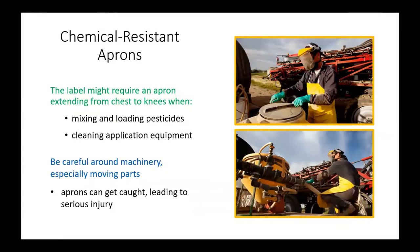Some labels include chemical-resistant aprons on the list of required PPE during mixing and loading tasks or when cleaning application equipment. This protects handlers from pesticide splashes, spills, and splash-back droplets when hosing off equipment. The apron shown extends from chest to knees, which is great for those tasks. However, the apron strings or loose ends could easily get caught in moving machinery parts and result in injury. Therefore, never wear an apron when working around machinery.